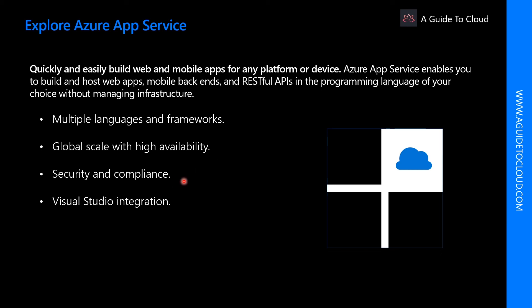For security and compliance, App Service is ISO, SOC, and PCI compliant. You can authenticate users with Azure Active Directory or with social login sign-ins like Google, Facebook, Twitter, and Microsoft. You can also create IP address restrictions and manage service identities. Finally, Visual Studio integration provides dedicated tools that streamline the work of creating, deploying, and debugging your applications.